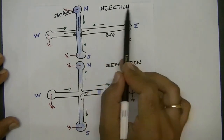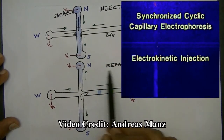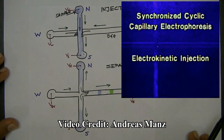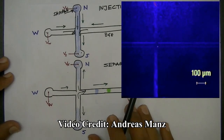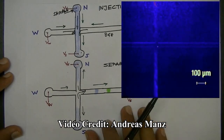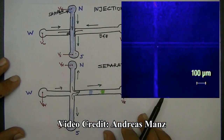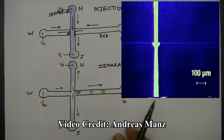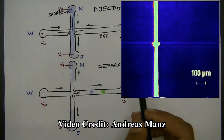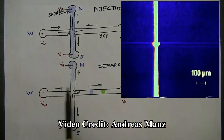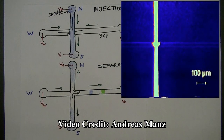This type of voltage sequencing scheme enables a very tight injection and separation. In the video that follows, you will see the separation of two fluorescent species — first the injection step, and then the separation step.